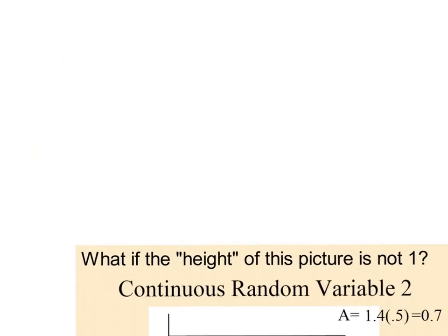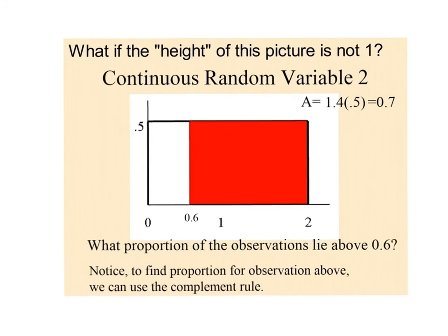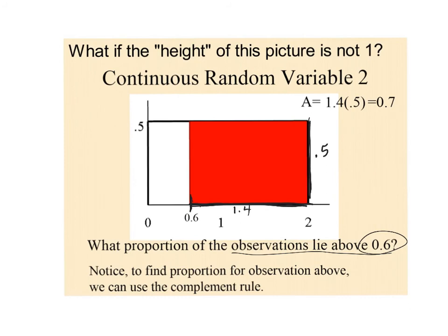Here's another rectangle-shaped distribution. What's the probability that an observation is above 60%? The base runs from 0.6 up to 2, giving a length of 1.4, and the height is 0.5. So the proportion of observations in that section is 1.4 times 0.5 — 70% of observations lie in that red section.